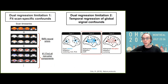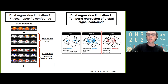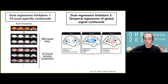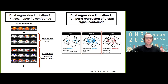Secondly, it is not correcting accurately for global signal fluctuations, since it is not computing some kind of temporal regression. In the next few slides, I'll describe how we developed an NPR algorithm that can account for these limitations.